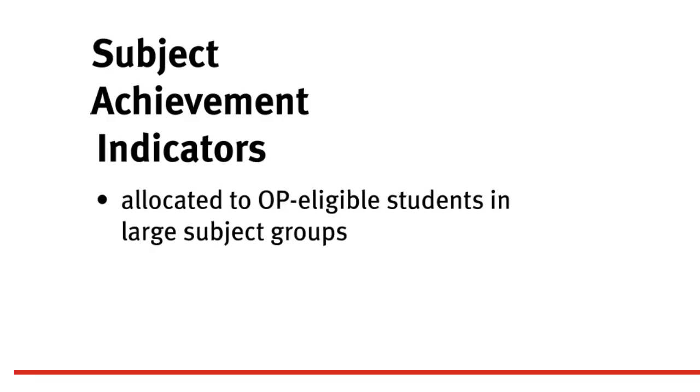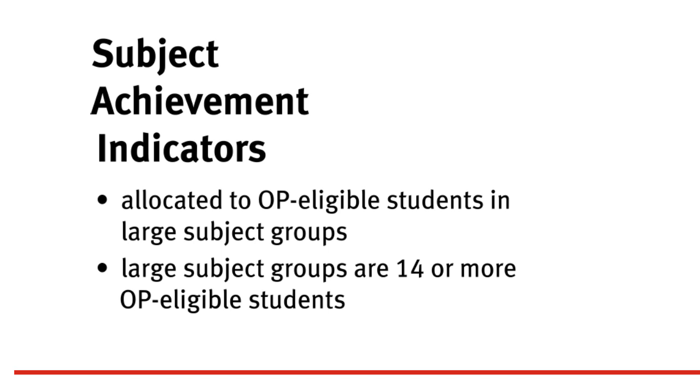SAIs are allocated only to OP-eligible students in large subject groups of 14 or more OP-eligible students. Students who are not OP-eligible are not assigned SAIs. It's very important that teachers understand that the QSA uses SAIs, not levels of achievement, to calculate OPs. For this reason, a careful and accurate decision-making process is crucial, because teachers really do hold their students' OPs in their hands.